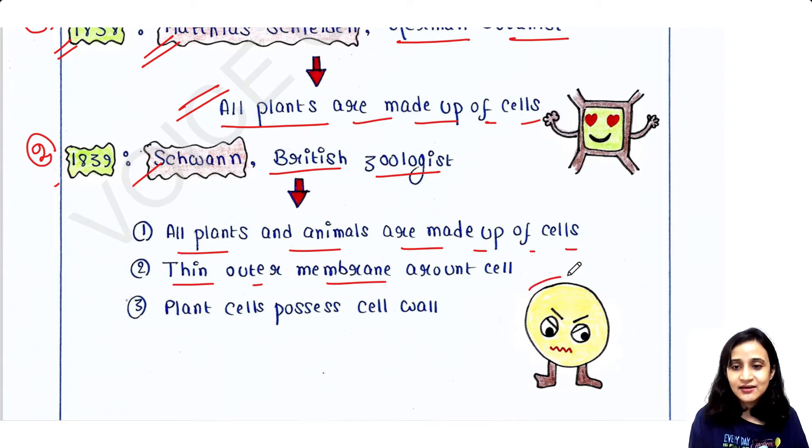So this is the cell here. A thin outer membrane is present. At that time it was not named as plasma membrane, but he saw that a thin membrane is present. That was actually plasma membrane.